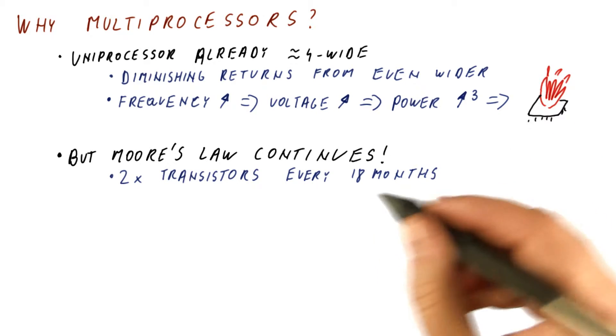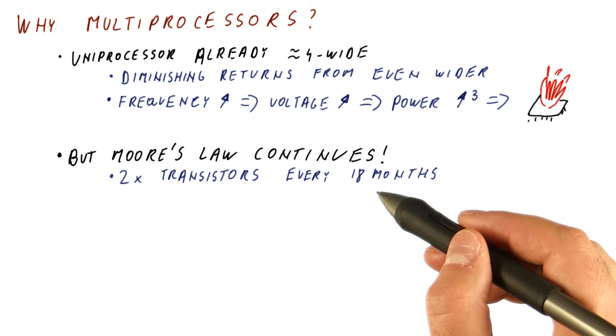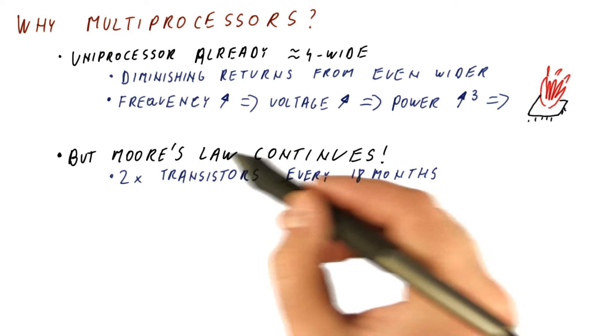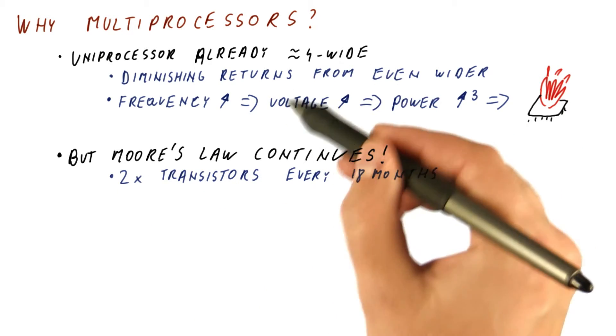But Moore's law continues. We get twice the transistors every 18 months for the same cost as before and in the same area as before. So we want to benefit from this and improve the overall performance, but we no longer can do it this way.